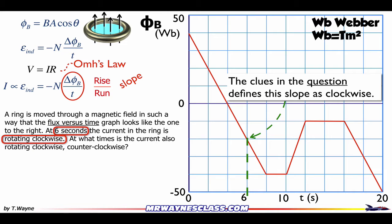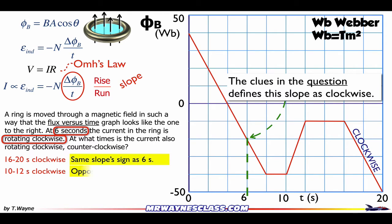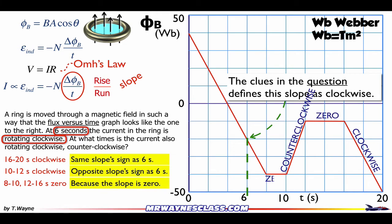Looking for other times rotating clockwise means finding other negative slopes — that's from 16 to 20 seconds. If negative slope is clockwise, then a positive slope in this case is counterclockwise. There's another counterclockwise section from zero to eight seconds, which is the section containing six seconds. Where the slope is zero, there's no change in flux, meaning no potential difference and no current is generated — that applies to sections like 8 to 10 seconds and 12 to 16 seconds.